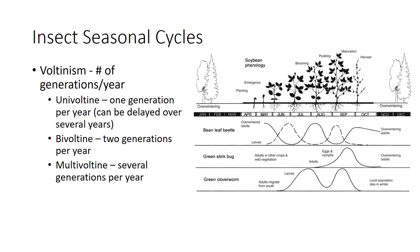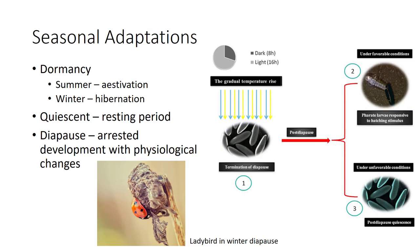Multivoltine insects tend to be small and fast-developing, using resources that are more evenly available throughout the year. Examples include houseflies, thrips, aphids, and the European corn borer. You can have all the stages present toward the end of the season. The developmental progression from egg to adult is often interrupted by a period of dormancy.